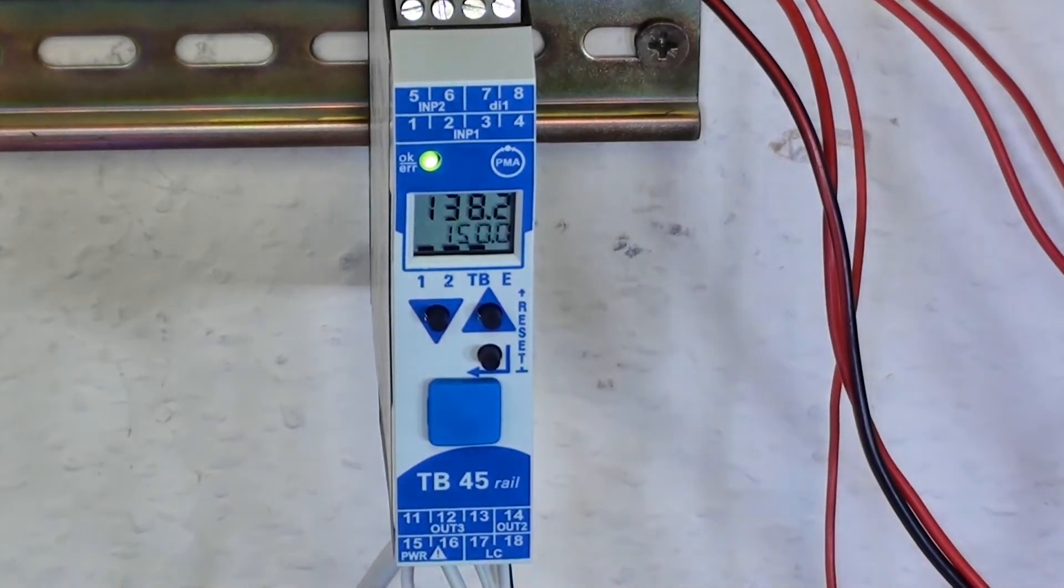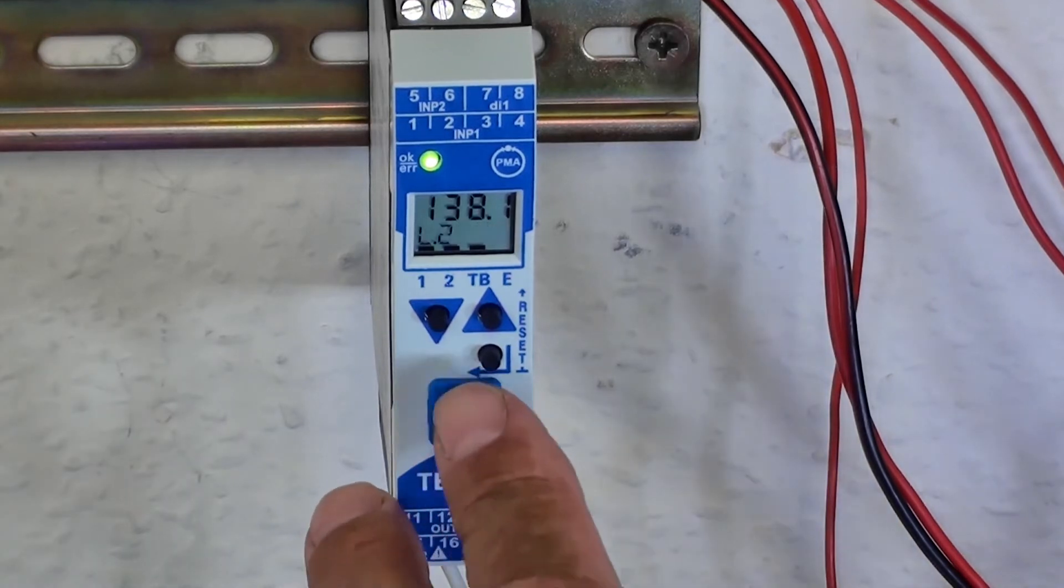We can do the same thing for Output 2, and I've configured this as a fleeting alarm, Output 2, at 150 degrees C.